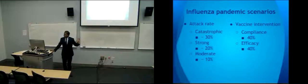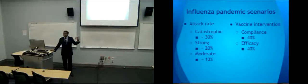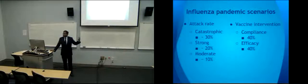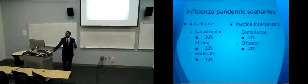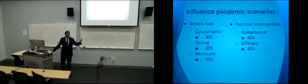We constructed three different pandemic scenarios. The first is a catastrophic influenza scenario, where 30% could potentially be infected — an attack rate of around 30%. The second is a strong influenza scenario with an attack rate of around 20%, and the third is a moderate scenario with around a 10% attack rate. Vaccine intervention compliance is 40% and efficacy is 40%.